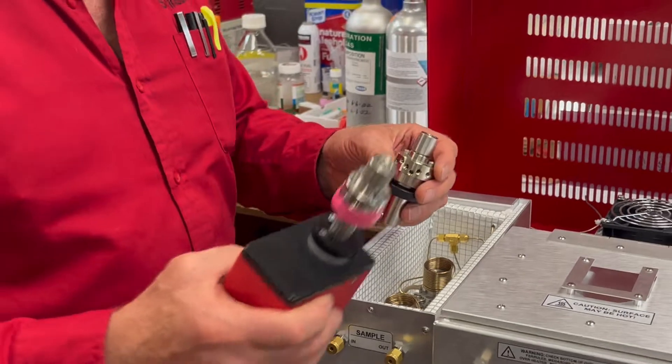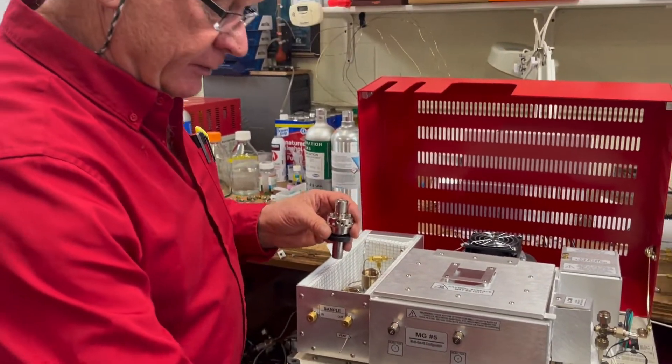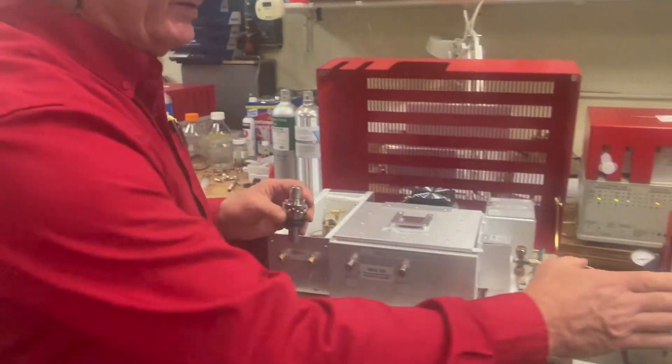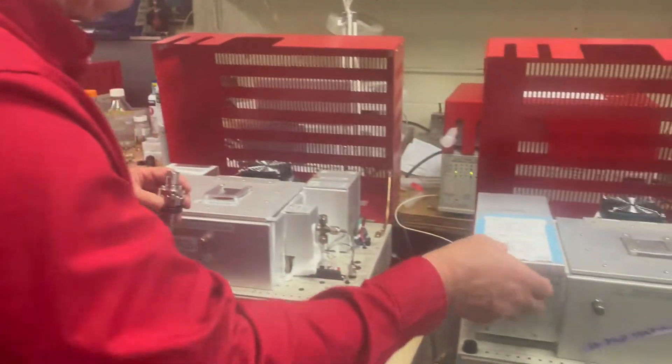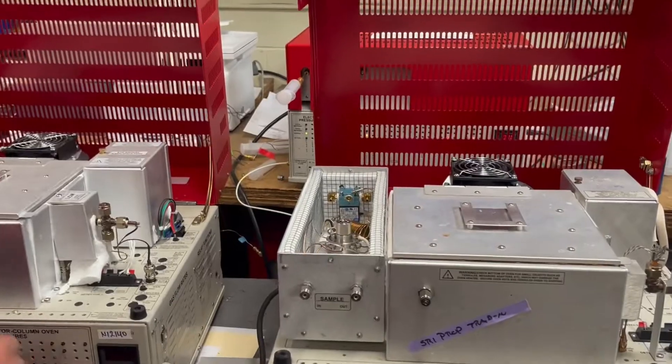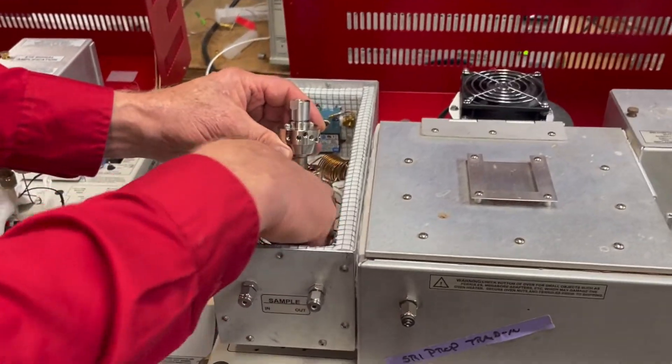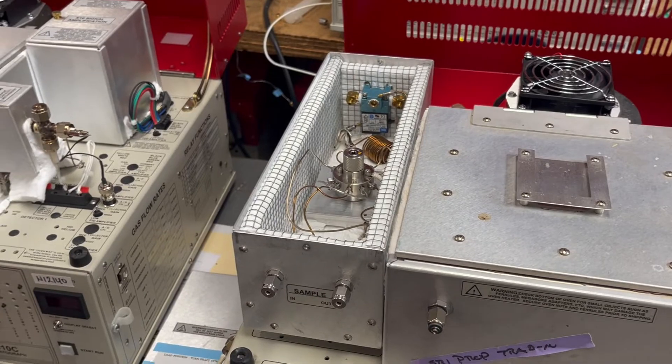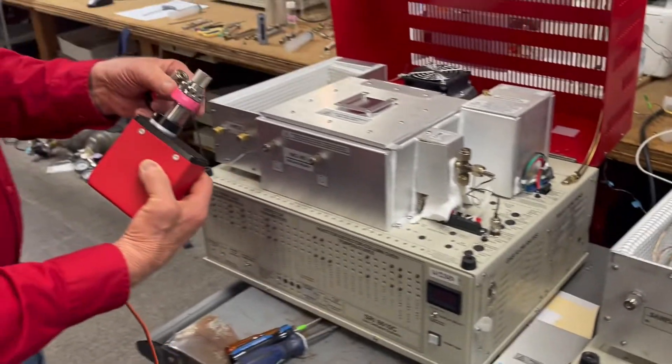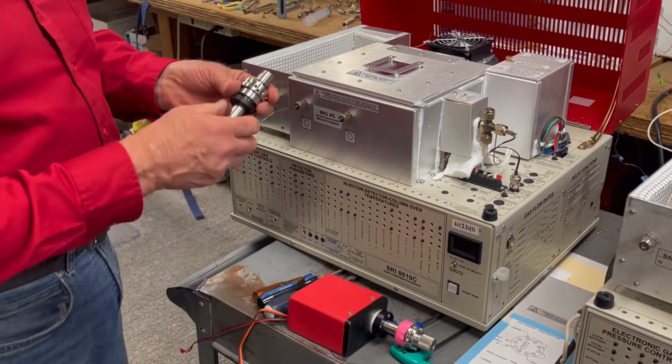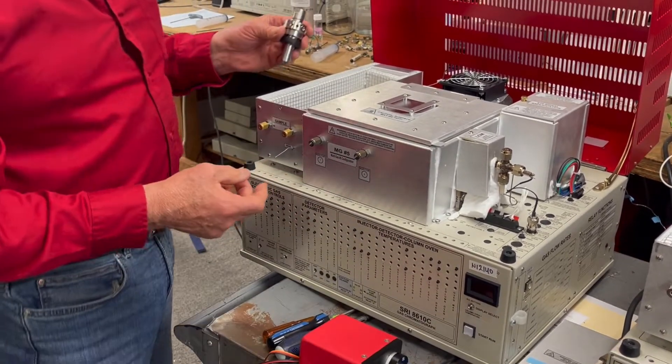So, once in a while, it's necessary to replace this valve head. This video, we're just going to talk about how to do that. This GC over here is very similar, except it has this slightly larger valve head. This one is called a Valco valve, and this one is called an AFP valve. They're basically almost identical, but two different companies make them.